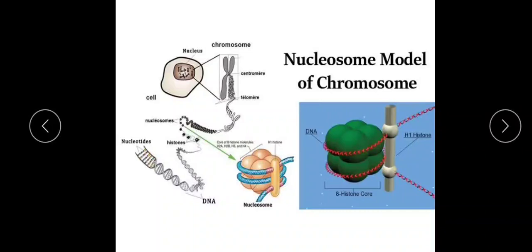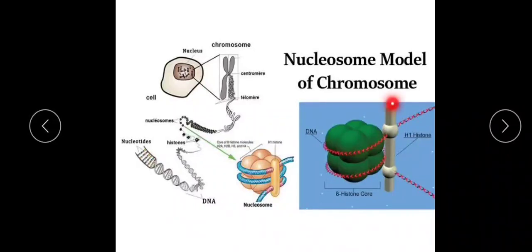We have not yet mentioned the fifth type of histone — H1. This H1 histone does not interact with the nucleosome core. It is found outside the nucleosome core, where it binds to the linker DNA — near the site where DNA enters and exits the nucleosome. This part of the DNA connecting nucleosomes is called the linker DNA.